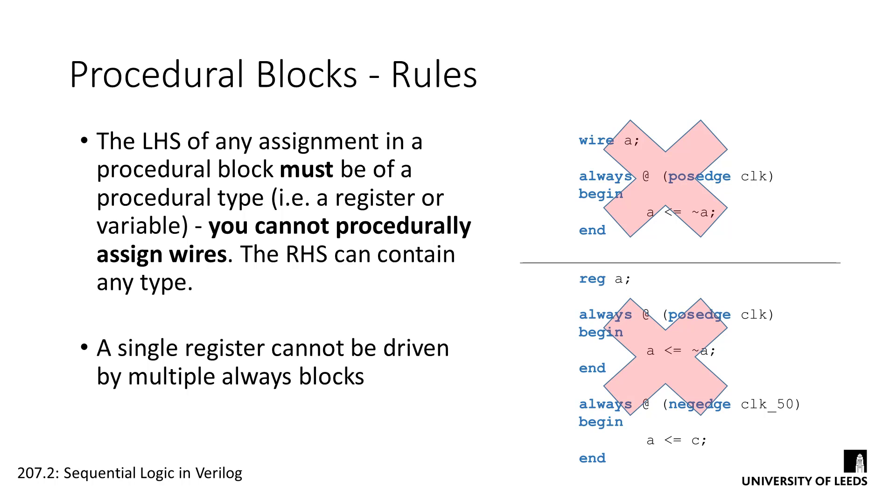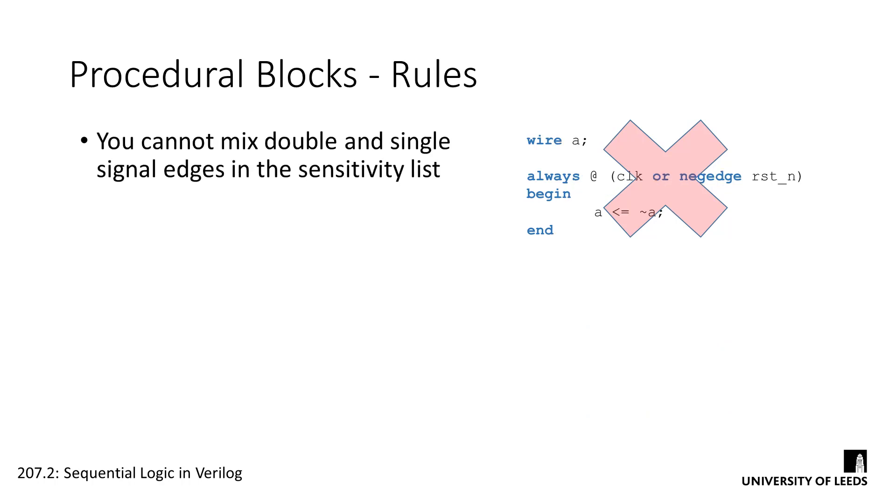The sensitivity list for an always block determines the clock signal for the flip-flop representing that register element. A flip-flop can only have one clock source, therefore a register can only be included in a single always block. Along similar lines, you cannot mix double and single signal edges in the sensitivity list. The device architecture simply can't handle it.